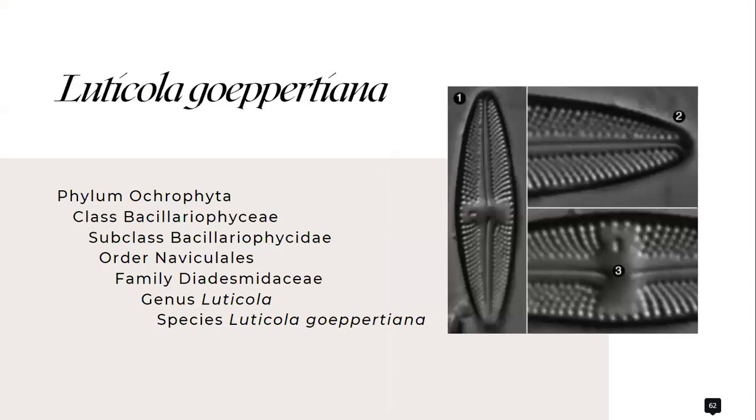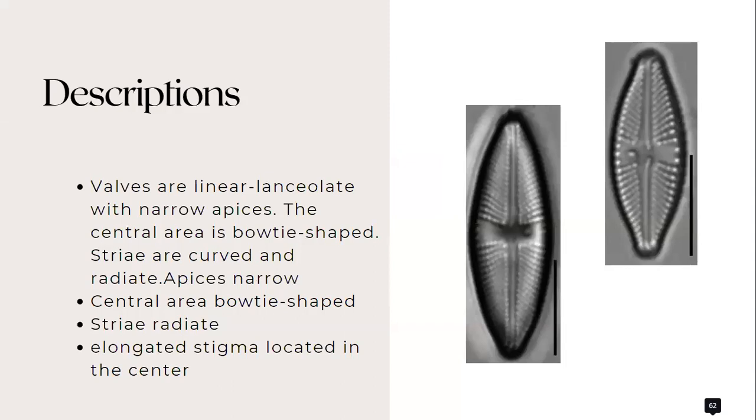Next, let's move on to Luticola goeppertiana, which belongs to the family Diadesmidiaceae. Here are the descriptions. The valves are linear lanceolate with narrow apices and the central area is bowtie-shaped.